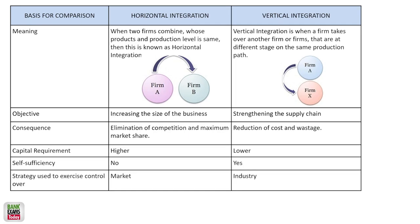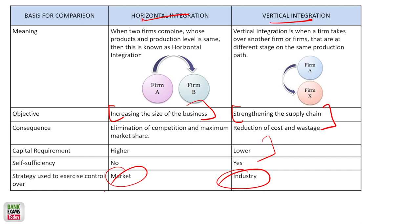When two firms are selling the same product at the same stage of production, that is horizontal integration. If they are at different stages of production, that is vertical integration. The objective of horizontal integration is to increase the market size, while vertical integration aims to strengthen the supply chain and reduce costs. The strategy of horizontal integration is to capture more market share, while vertical integration is to control the whole industry.